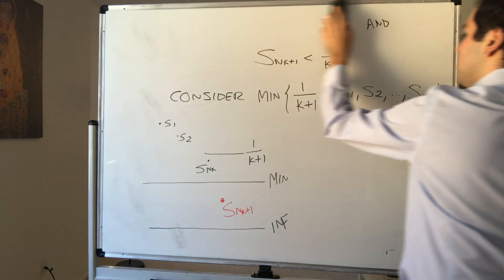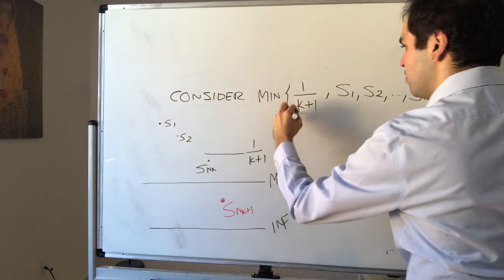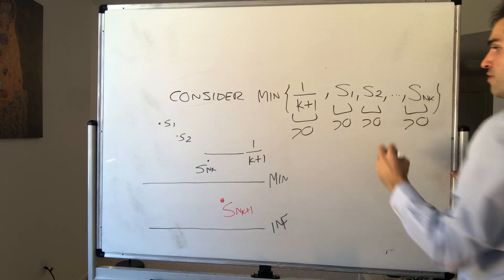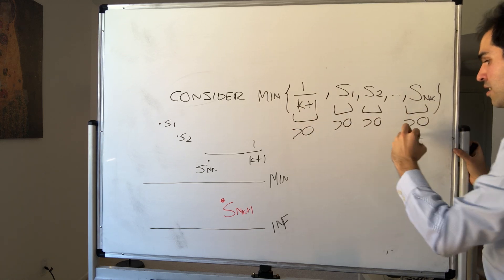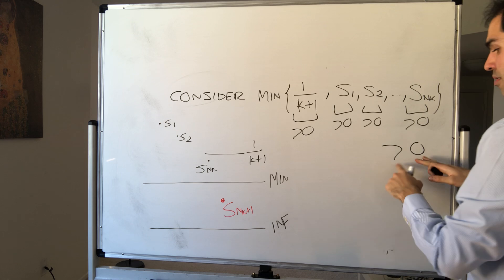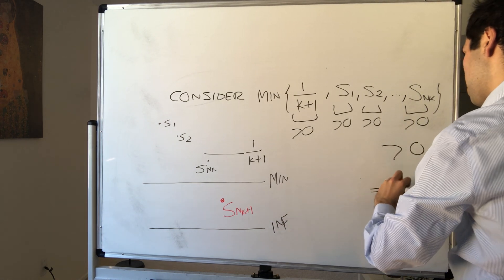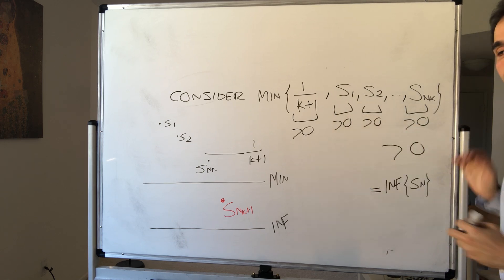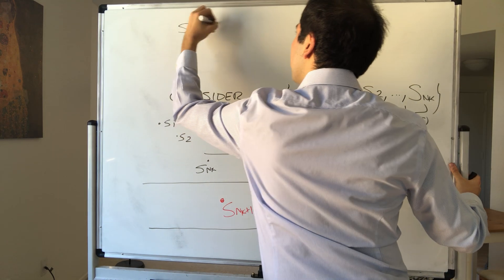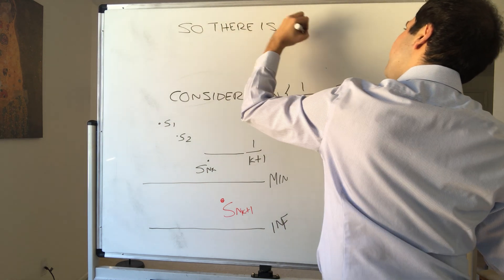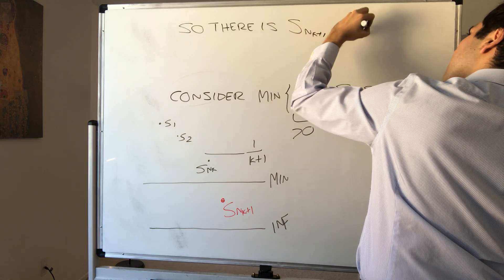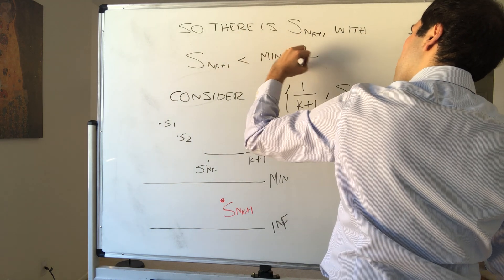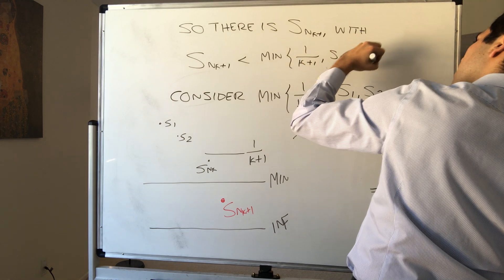So since, now here's the thing. This is positive, this is positive by assumption, this is positive, this is positive, and since you're taking a minimum of finite number of values, this is positive. And remember what is 0? Well, it's just the infimum. So, again, same situation, you're not the worst student, so there's a student who's worse than you. So there is Snk plus 1 with Snk plus 1 less than the minimum of all those. S1, S2, up to Snk.